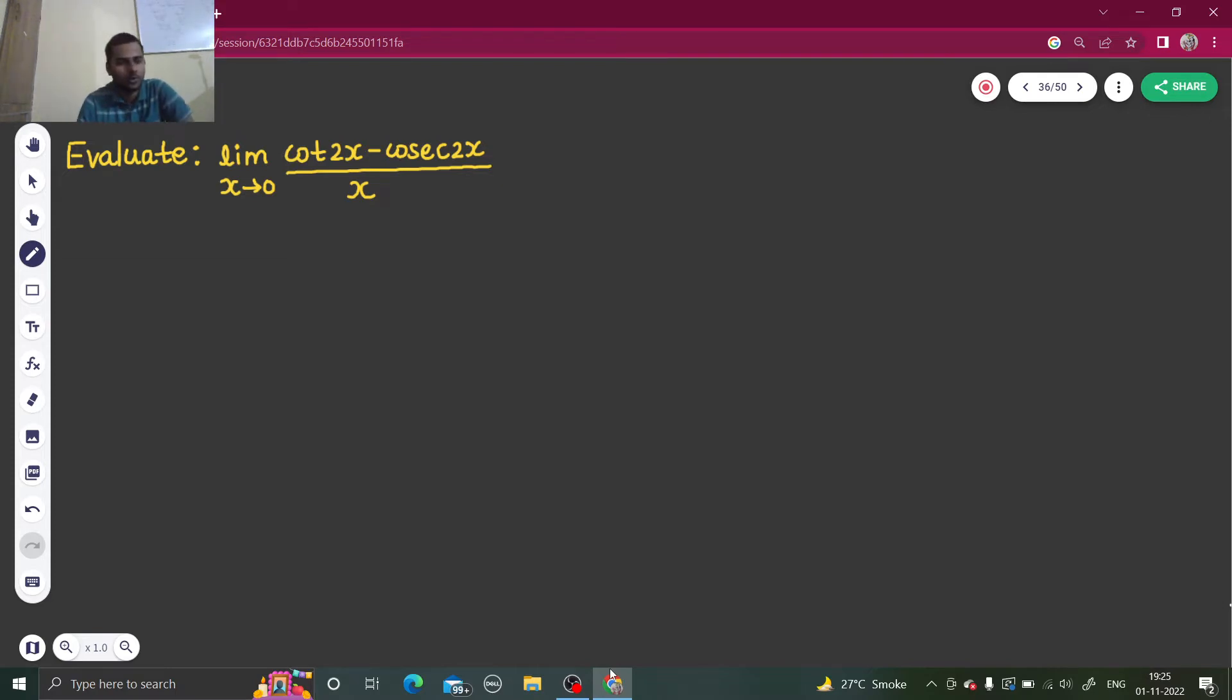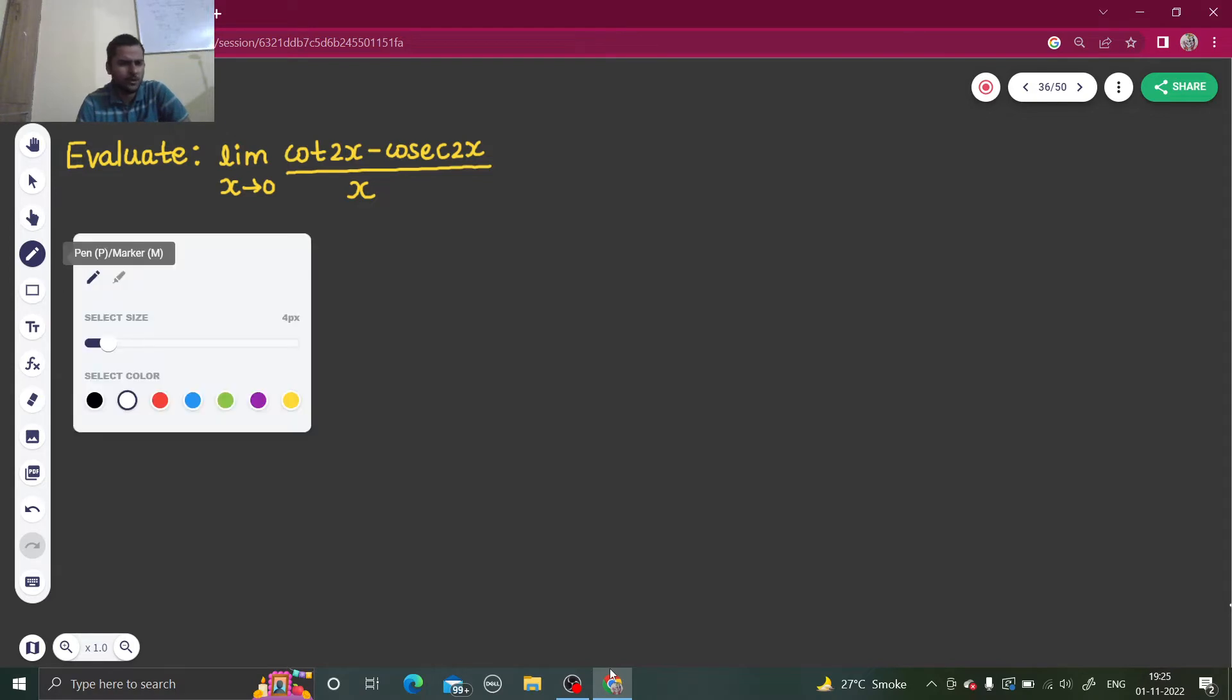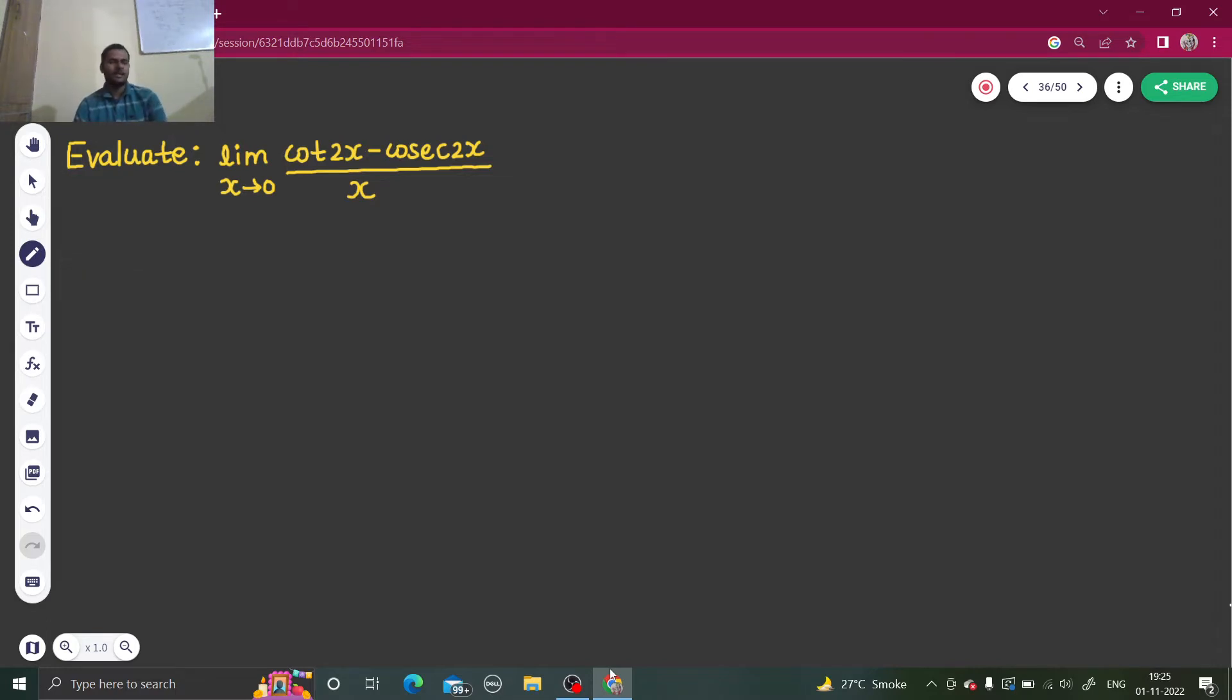So this is a trigonometric limit. We'll of course use some formulas. Let's see how we can first simplify this. So we know that cot is cos upon sine and cosec is 1 upon sine.